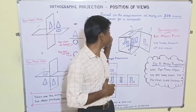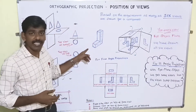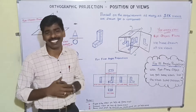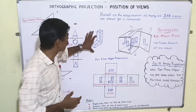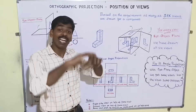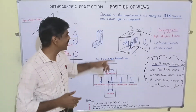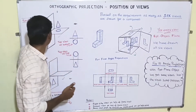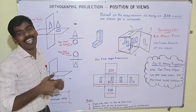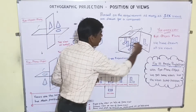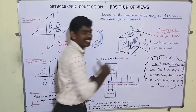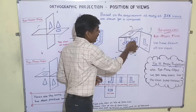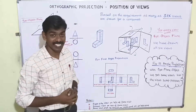Considering a 3D object and using first angle projection, let's see how we get the six views and where to position them. Imagine the object is held within a cube of transparent faces, with six faces surrounding it. Using the concept of eye-object-plane, the front view is obtained on the front face. Looking from the top using eye-object-plane, we get the top view on the top face.